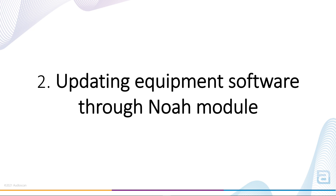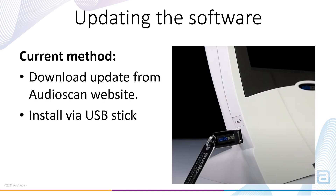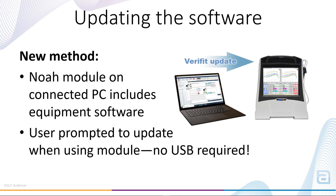Feature 2: Updating Equipment Software Through the NOAA Module. Currently, Verifit 2 and Axiom equipment software updates are downloaded from the AudioScan website to an internet-connected PC. This download is then used to program a USB stick with the update, which is then installed by connecting the USB stick to the equipment and turning it on. While this is still possible, the 2021.2 software release for Verifit 2 and Axiom provides a new, potentially more convenient method of updating. When the AudioScan NOAA Module is updated, it will now also include any relevant updates to the equipment software. This software will reside on the NOAA PC, ready for later transfer to the equipment.